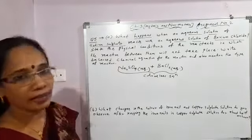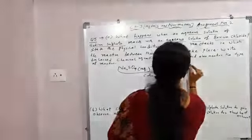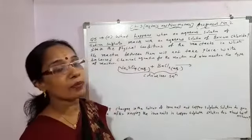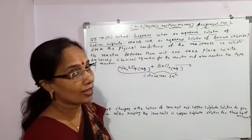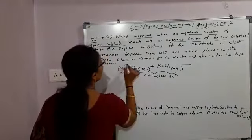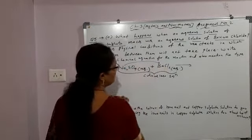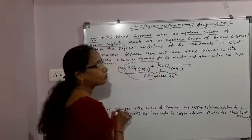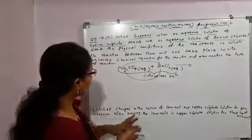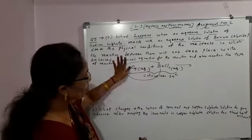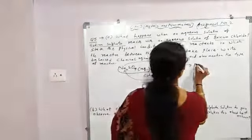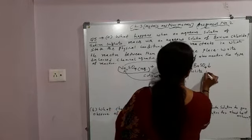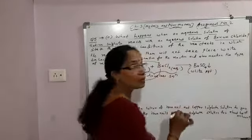When they react, immediately you get a white precipitate. So what happens? Immediately white precipitate is obtained. What is that white precipitate? Here sodium will take the place of barium and barium will take the place of sodium. When barium displaces sodium and takes its place, barium sulphate is formed. This is the white precipitate obtained — barium sulphate.